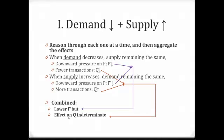If you have a decrease in demand together with an increase in supply, then the lower demand together with the higher supply will make sure that the equilibrium price is lower. The lower demand puts a downward pressure on price, and the higher supply puts a downward pressure on price as well, so you can say for sure that you will see a lower equilibrium price. However, the lower demand is expected to result in fewer transactions while the higher supply is expected to result in more transactions — these counteract each other, so the effect on equilibrium quantity will be indeterminate, with three possible diagram scenarios.